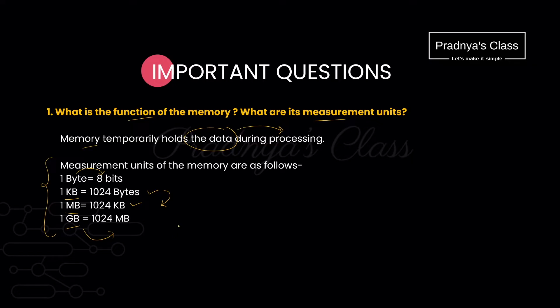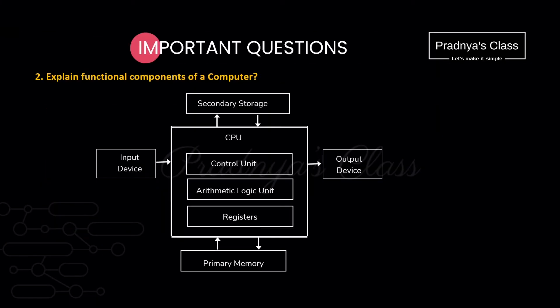And there are some more units like TB, PB, etc. This question may be asked for two marks. Moving ahead to the next question — this is one of the important questions in which we need to explain the functional components of the computer.